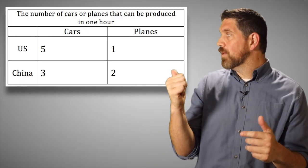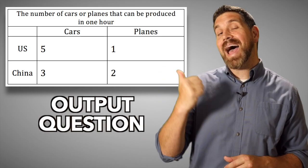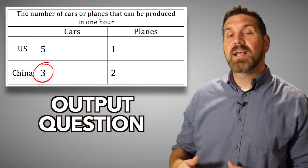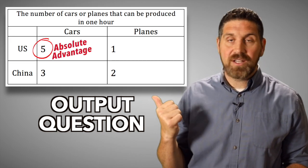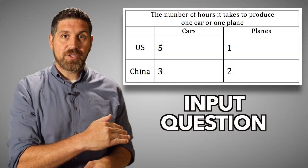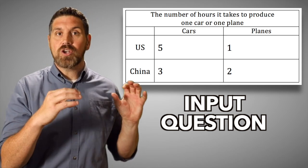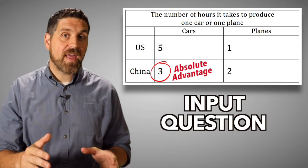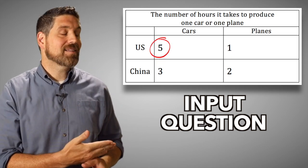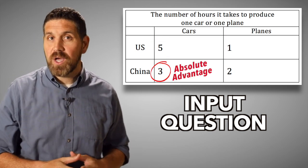Here's the hack: if you look at a table and you want higher numbers — you want to produce more cars, more planes — it's an output question. It's better to produce five cars than only three cars, so the United States has an absolute advantage in the production of cars. But when looking at input questions, you want lower numbers — fewer hours or less land or less capital to produce a certain amount of goods. So China has an absolute advantage in cars because it only takes them three hours to produce one car, where it takes the United States five hours.